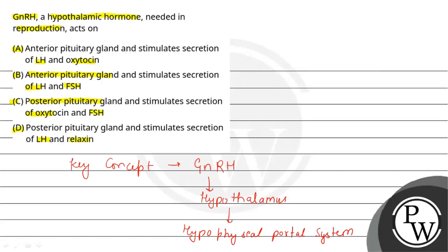So, it is very clear from the key concept that GnRH is a hypothalamic hormone which is important in reproduction. It acts on the anterior pituitary and stimulates secretion of LH and FSH.